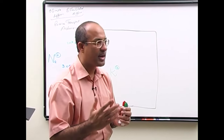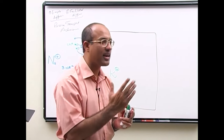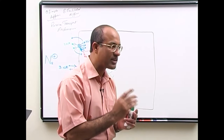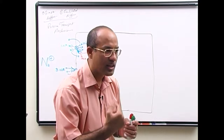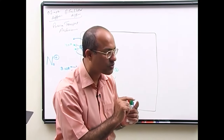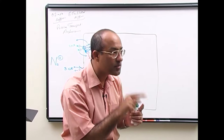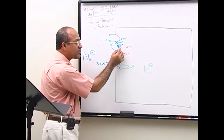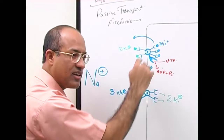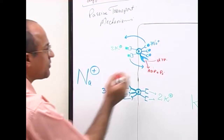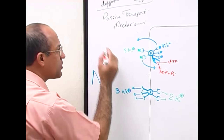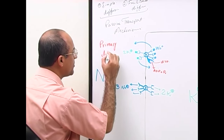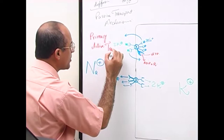Whenever substances are moved against the electrochemical gradient, there is active transport, and in active transport we need to use energy. If energy is utilized directly at the site of transport, then we call it primary active transport. Since energy is utilized at the site of transportation activity here, this is primary active transport.